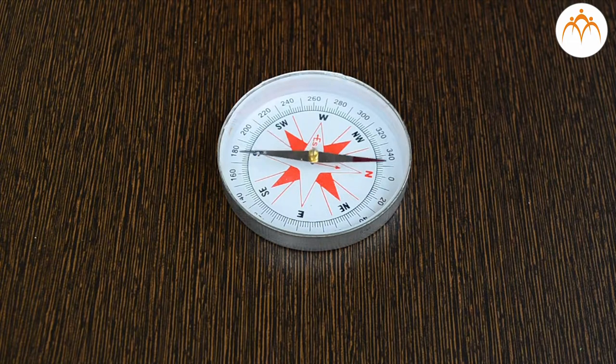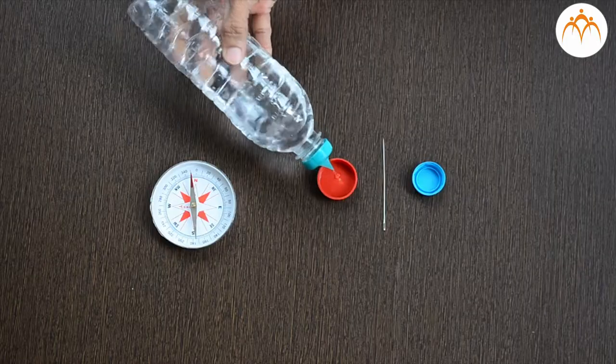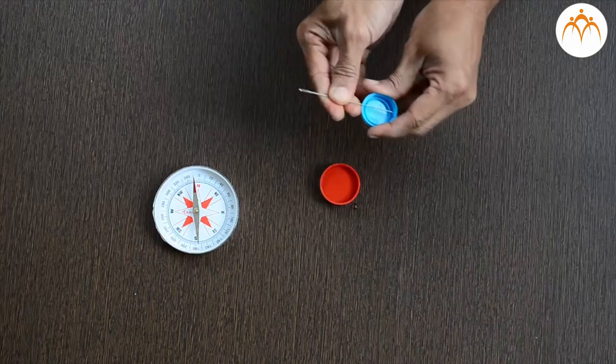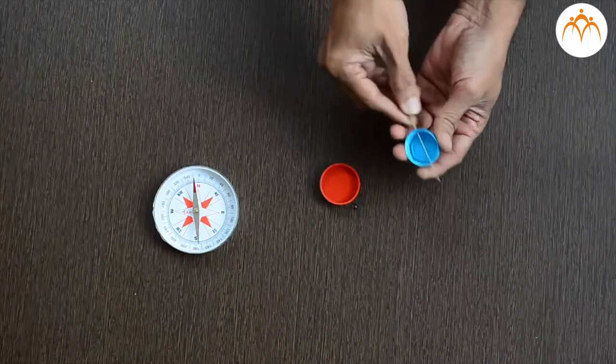You must have seen a magnetic compass like this available in the market. It is used for finding directions. We can make a similar compass using the needle we just magnetized. Take a water bottle cap and insert the needle in it.